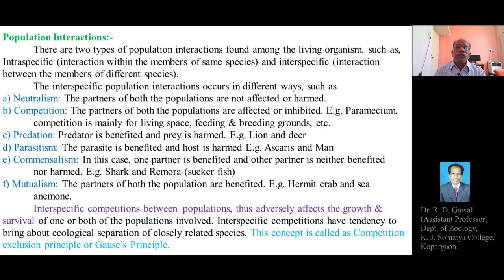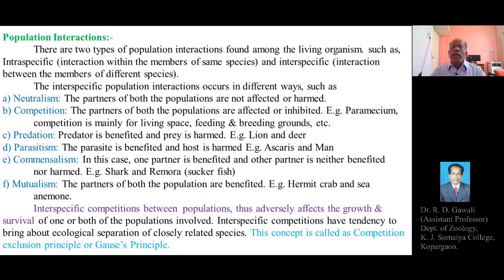First, we will explain neutralism. This is the neutral type of population interaction. In this case, the partners of both populations are not affected or harmed — there is no type of harmful effect occurring on any member among the two different populations.